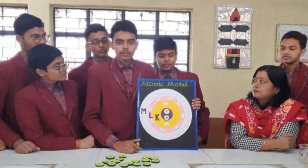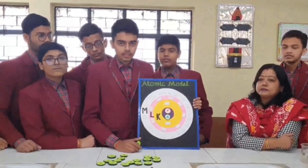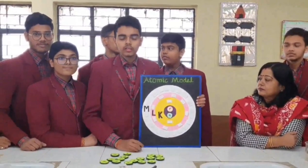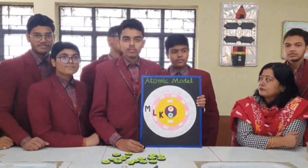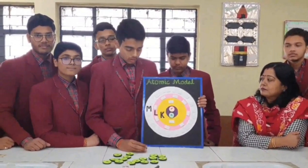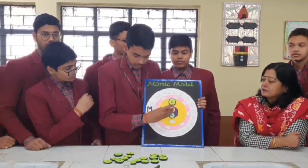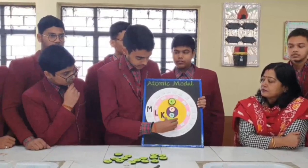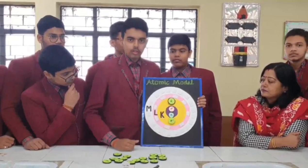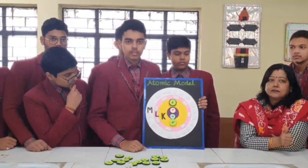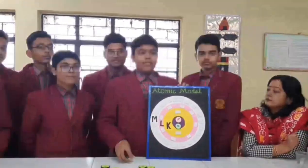Now I am going to represent helium. We know that the atomic number of helium is 2. So we will put 2 electrons in the K-shell. This is the electronic configuration of helium.